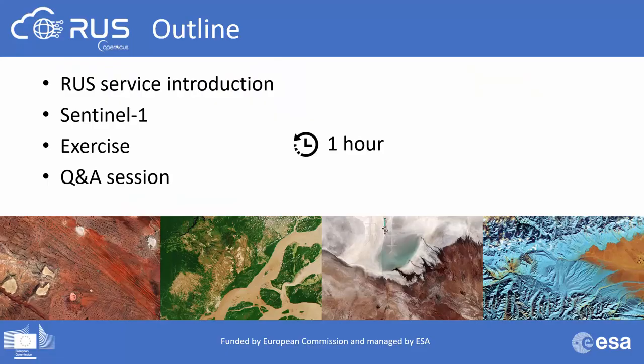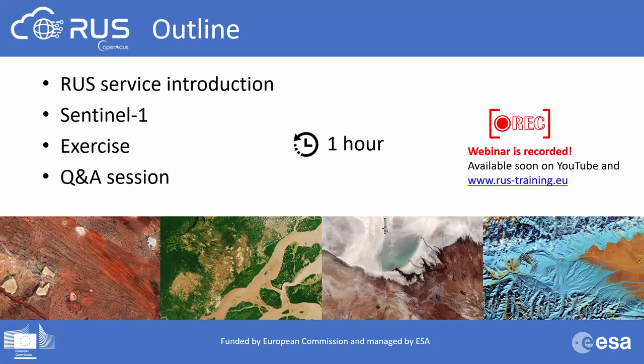This webinar is being recorded and you will be able to repeat this exercise later by registering as a ROOS Copernicus user. The complete webinar should last around one hour and is divided into four parts: introduction to ROOS Copernicus, a brief description of Sentinel-1, the exercise itself, and a Q&A session. Please send your questions using the questions tab of GoToWebinar — do not wait until the end.